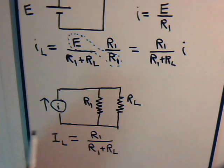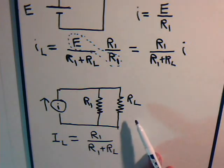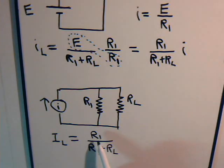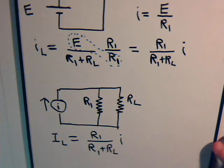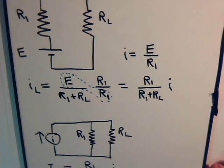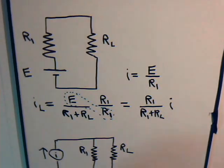This circuit and this circuit are the same, because the current that goes through resistor L is equal in both cases. What we said is that the current that flows through resistor L equals R1 divided by R1 plus RL, times the amount of current going into the circuit — and that is exactly what we derived from this circuit.